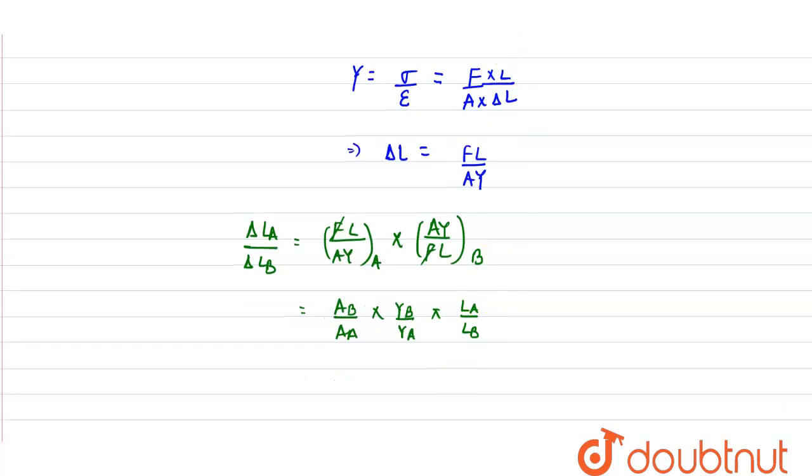Now we have been given all the ratios. For area we have been given the ratio of radius RA upon RB which is given to us as 3 upon 1. Now as we know that the area is pi R square, so we can say area is directly proportional to R square.